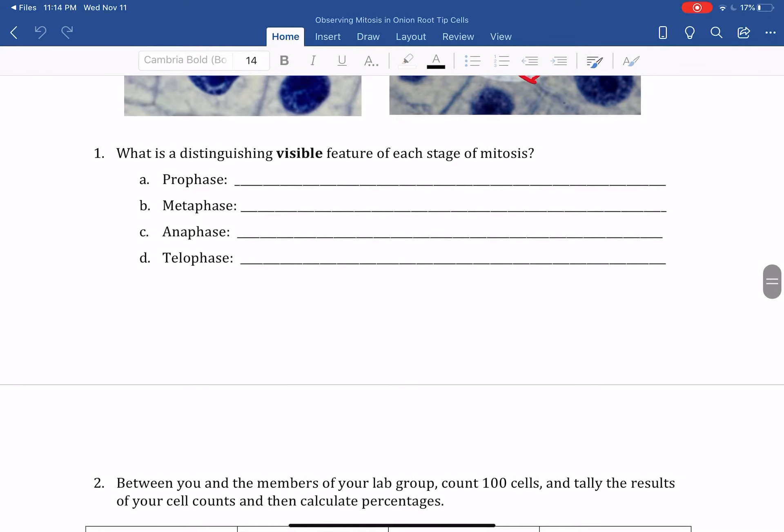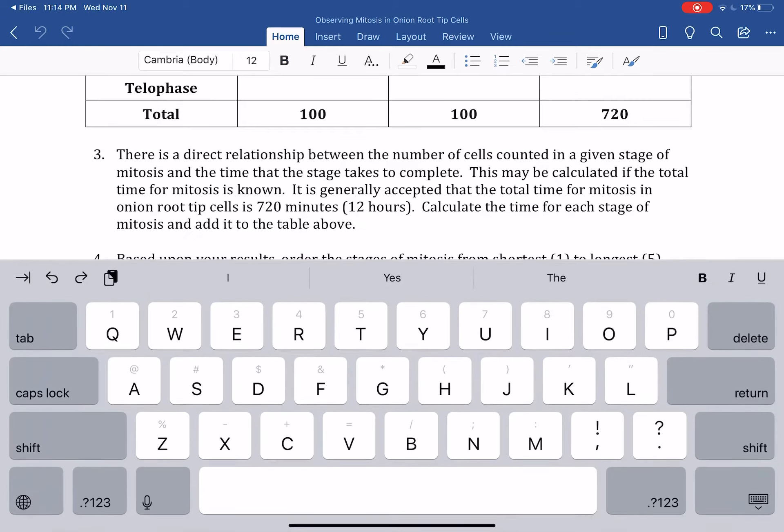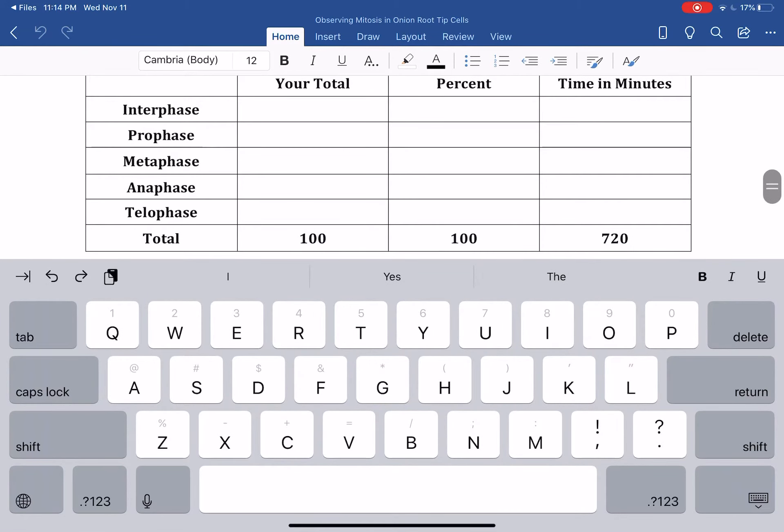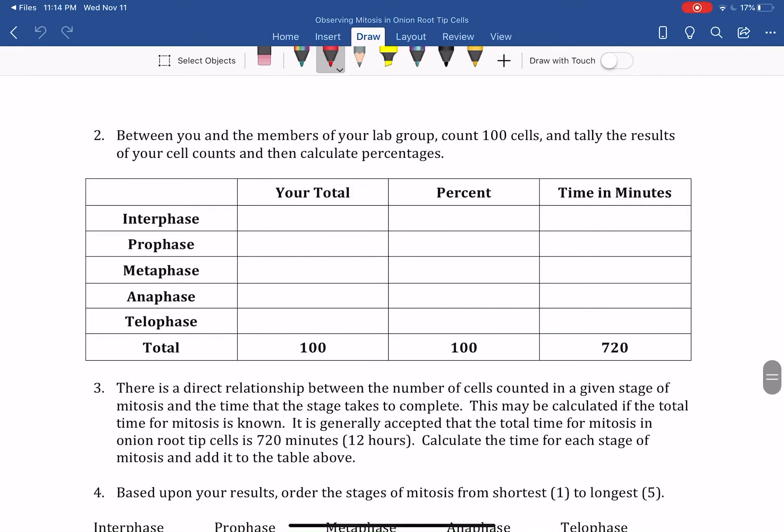And then you'll go back to that other assignment page, and you have a few questions to answer. The visible features in each phase, and then you're going to put in your total - so how many out of 100 you counted. If you counted over to 104, that's fine, just change your total to however many total you counted, and then calculate the percent.